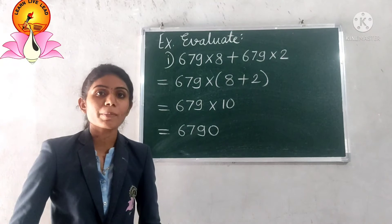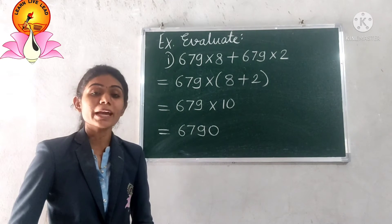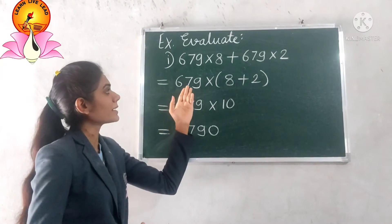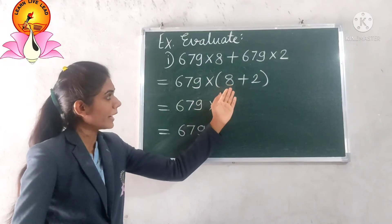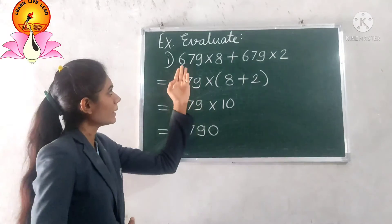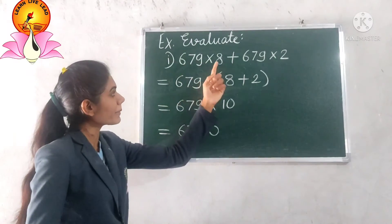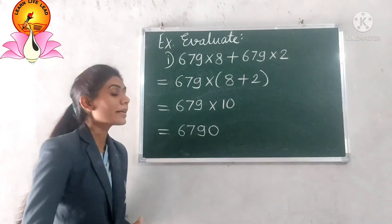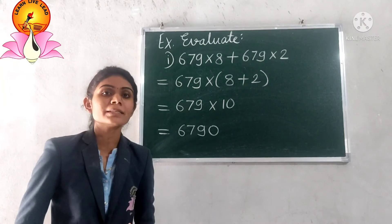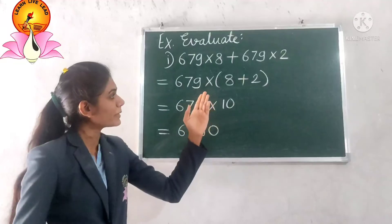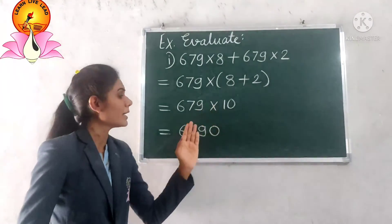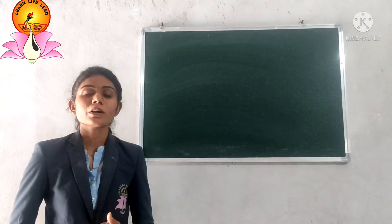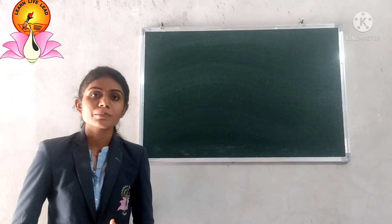Next example: evaluate 679 × 8 + 679 × 2 using the distributive property. Here we can take 679 as common. Taking 679 outside, what remains goes inside the bracket: 679 × (8 + 2). Solving the bracket first, 8 + 2 = 10, then multiplication gives 679 × 10 = 6,790.